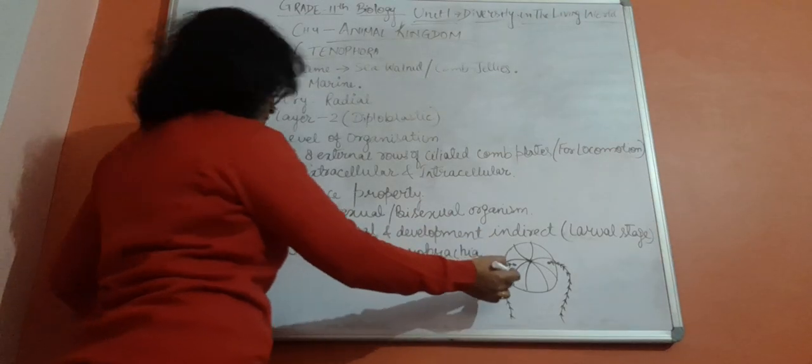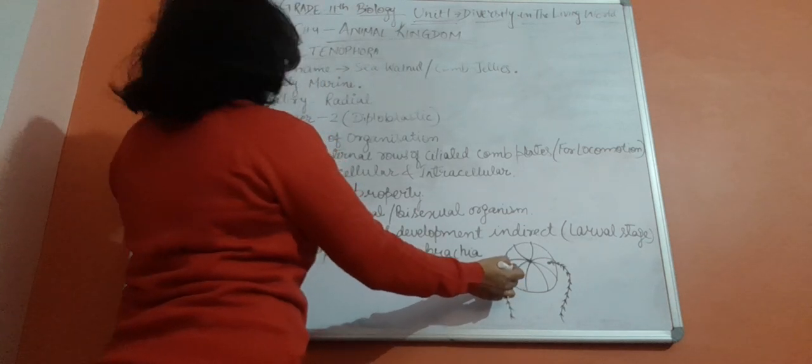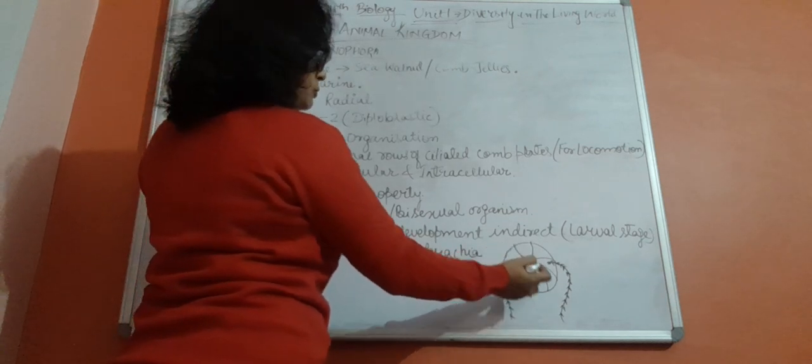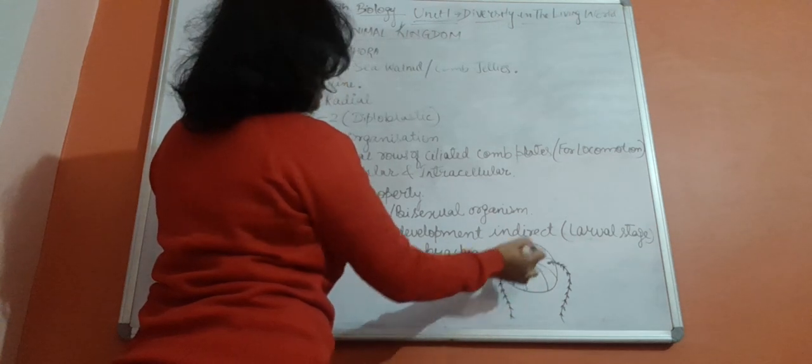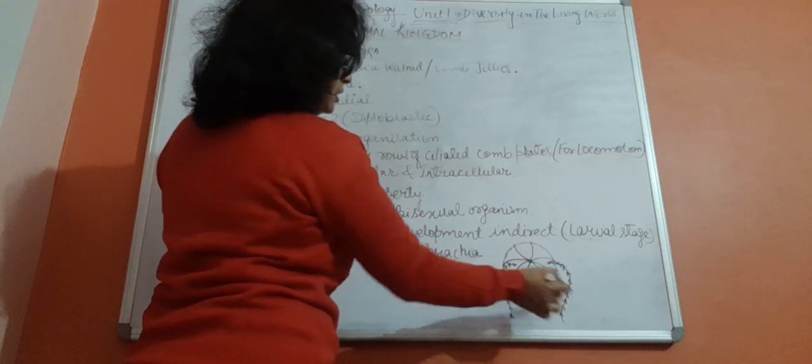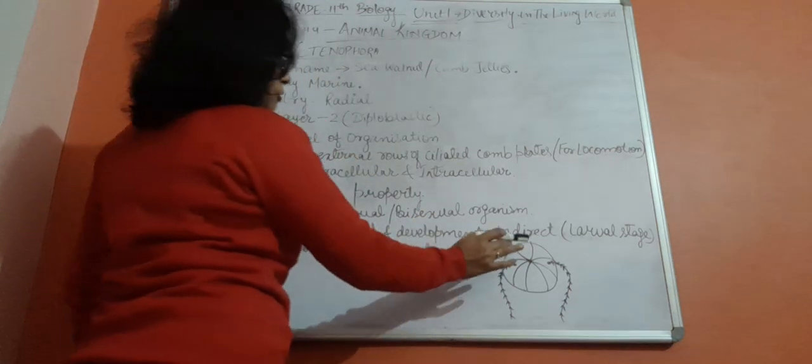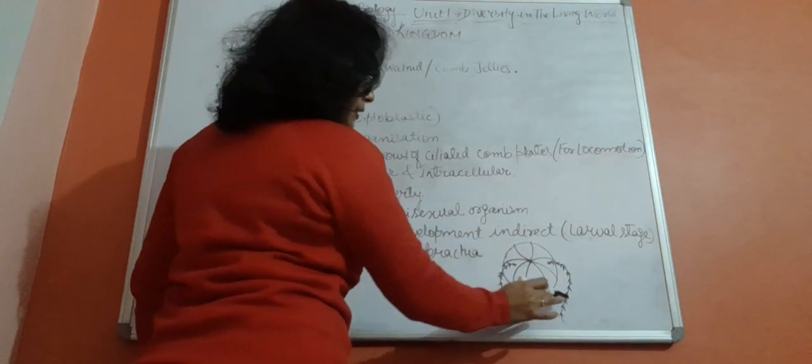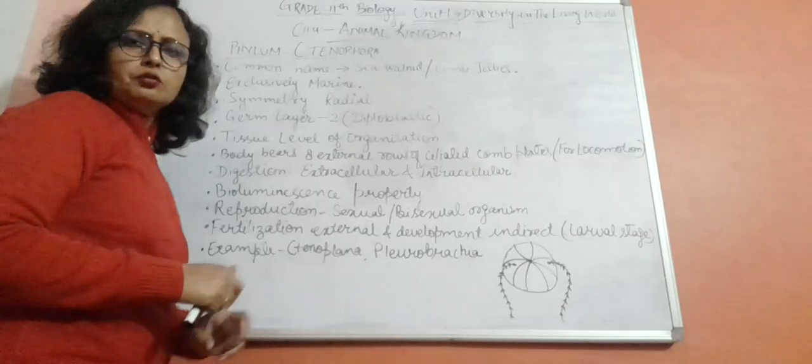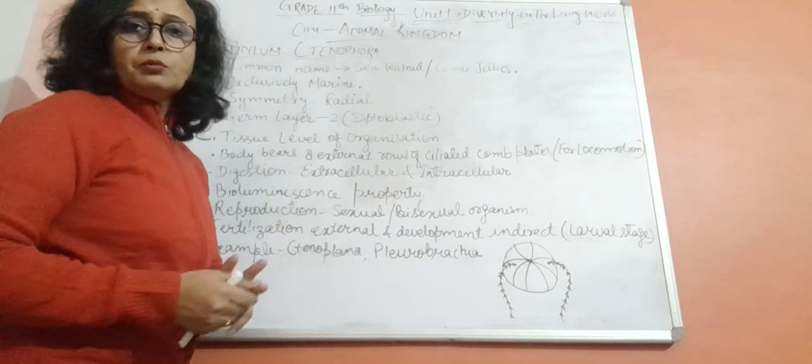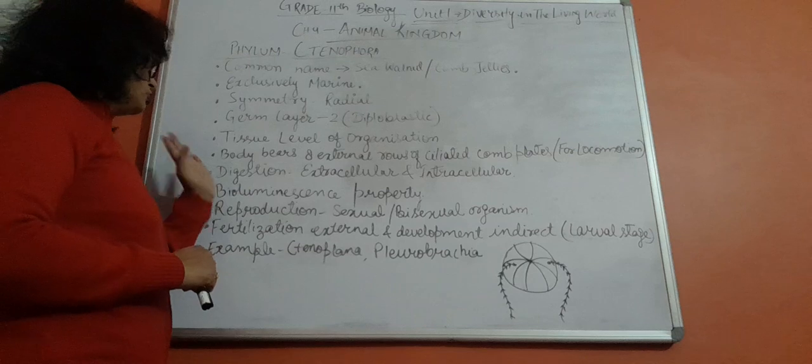Body bears eight external rows of ciliated complex. As you can see in this diagram of Pleurobrachia, this is the ciliated complex in its body. These ciliated complexes help in locomotion and movement. We already know cilia, pseudopodia, and flagella all help in locomotion.